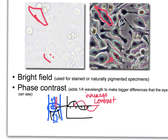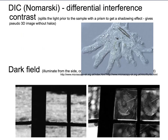DIC — differential interference contrast — gives a more three-dimensional image by allowing shadowing. This is done with a microscope connected to a computer. All four light microscopy methods can be used without stains, so cells can be alive and moving. These methods are excellent for looking at cells directly.